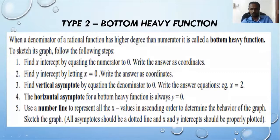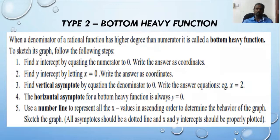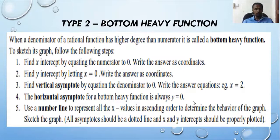When the denominator of a rational function has a higher degree than the numerator, it is called a bottom-heavy function. This means the power of x in the denominator is greater than in the numerator. For example, if the numerator is x and the denominator is x squared, it's a bottom-heavy function because the power of x in the numerator is 1 but in the denominator is 2.